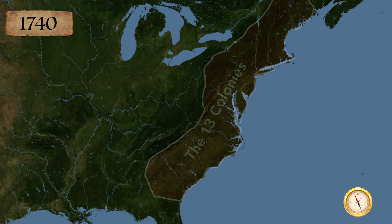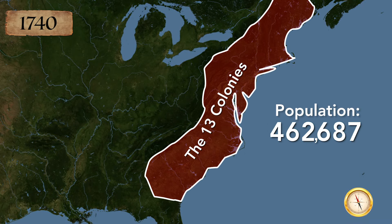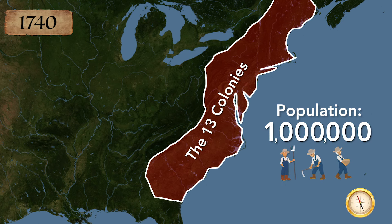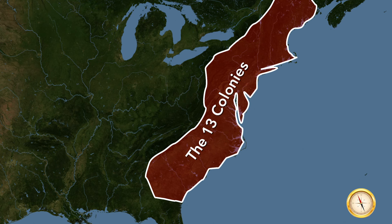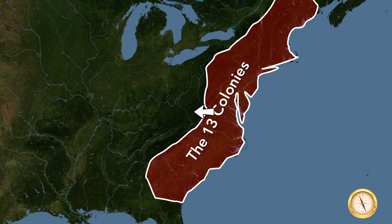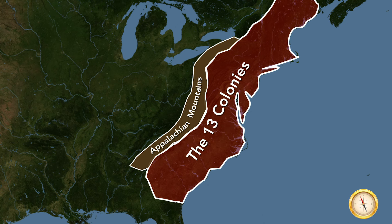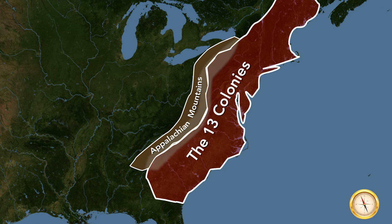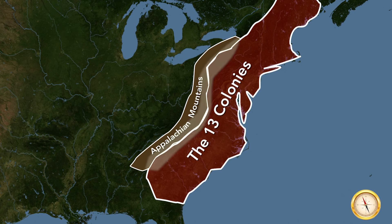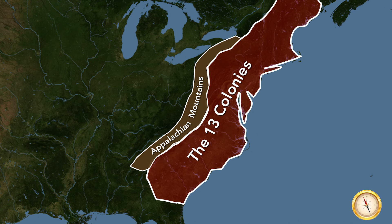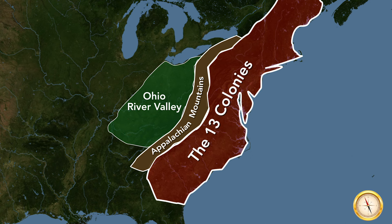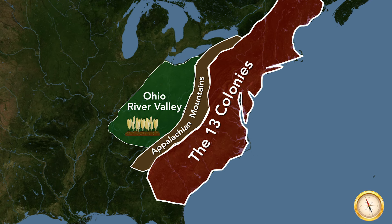By 1740, the population of the 13 colonies had grown to over one million people. Many of these colonists were small farmers and needed land to grow their crops. Due to overcrowding along the eastern regions of the colonies, people started moving west towards the Appalachian Mountains. Colonists began moving west into the Ohio River Valley, an area known for its rich, fertile soil and natural resources.